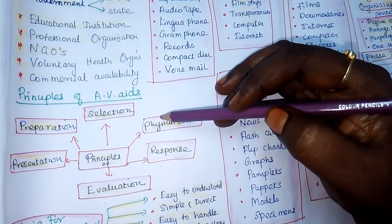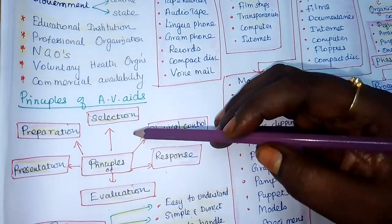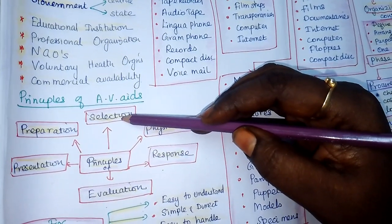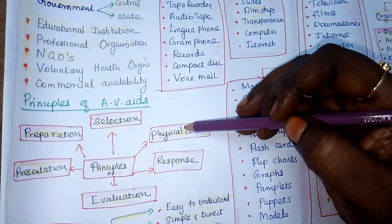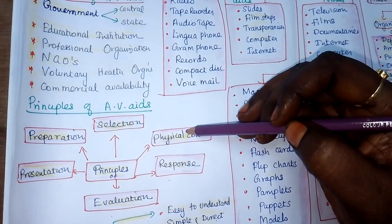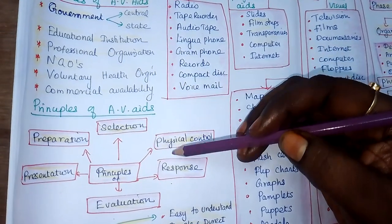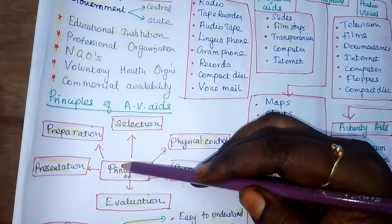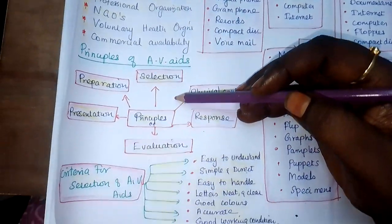You have to follow some principles when selecting AV aids. The principles of selection include: selection according to the educational objectives, and selection according to the physical condition. For example, if you bring an overhead projector but the light is not working, it is useless. Other principles include: principles of response, principles of evaluation, principles of presentation, and principles of preparation — including the ability to prepare it and to preserve it. These are all principles you must remember.